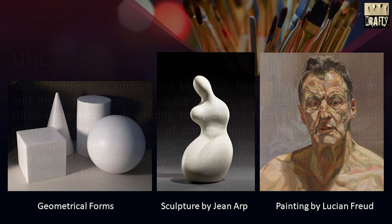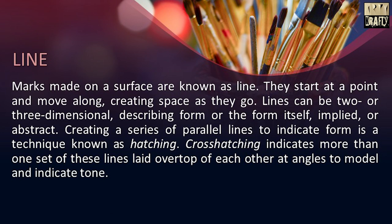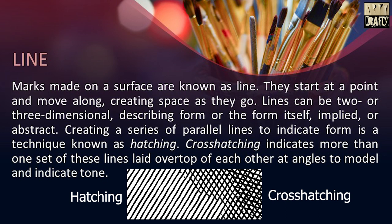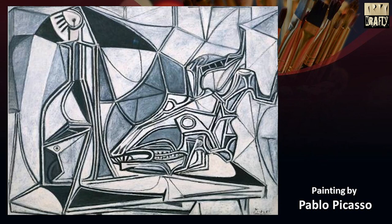Then comes line. Marks made on a surface are known as line. They start at a point and move along, creating space as they go. Lines can be two or three-dimensional. Creating a series of parallel lines to indicate form is a technique known as hatching. Cross hatching indicates more than one set of these lines laid over top of each other at angles to model and indicate tone. This is the painting done by Pablo Picasso. It is totally based on lines.